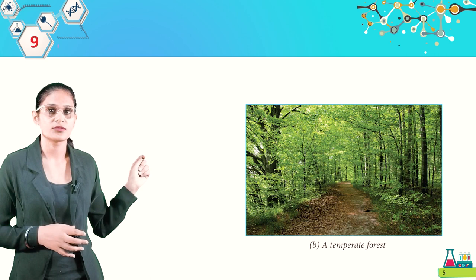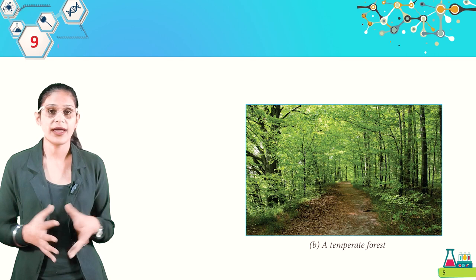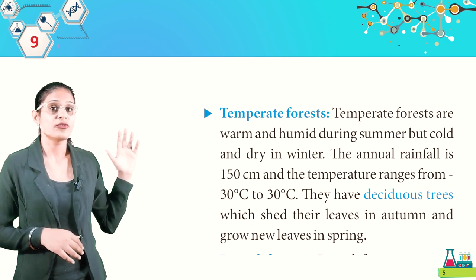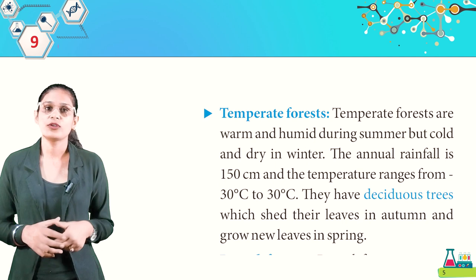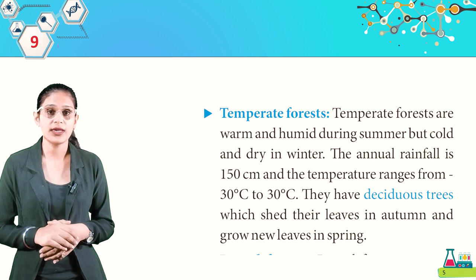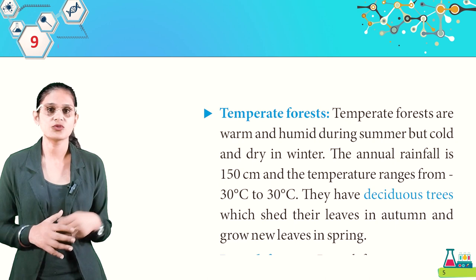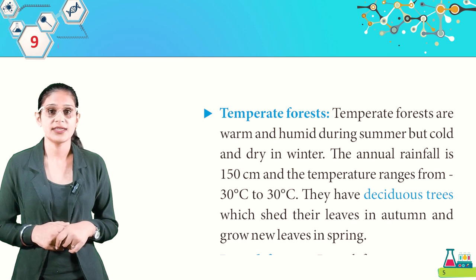Now we will discuss the temperate forest. Temperate forests are warm and humid during summer but cold and dry in winter. The annual rainfall is 150 cm and the temperature ranges from -30°C to 32°C. They have deciduous trees which shed their leaves in autumn and grow new leaves in spring.